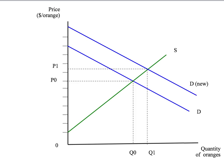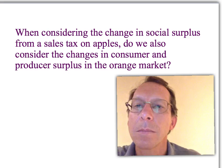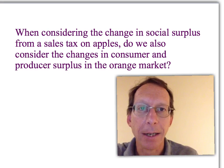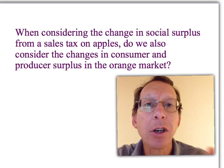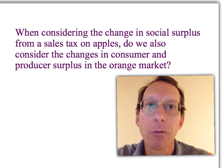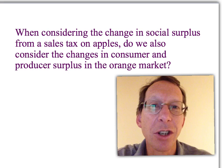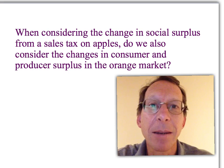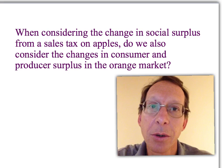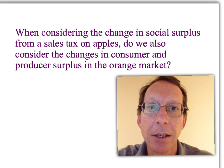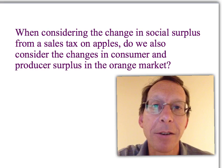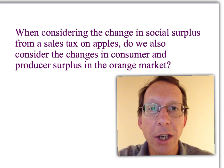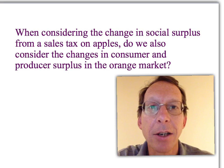When we're considering the deadweight loss of the sales tax, how come we didn't look at this increase in social surplus in the orange market? Surely we've made a mistake here. No. When you look at a tax on the apple market, you've actually already taken into account all the effects on all other markets. You don't have to look at those other markets individually. Imagine if you actually had to think of the change in social surplus individually in every other market just to analyse the effects of a tax on apples — you wouldn't be able to do it in a lifetime. It would be an error to start trying to measure social surplus in the market for complements and the market for substitutes. All the changes in social surplus are already taken into account in the one market.